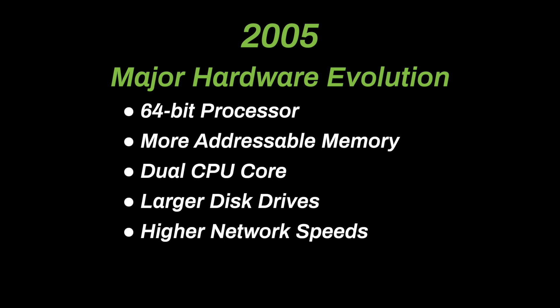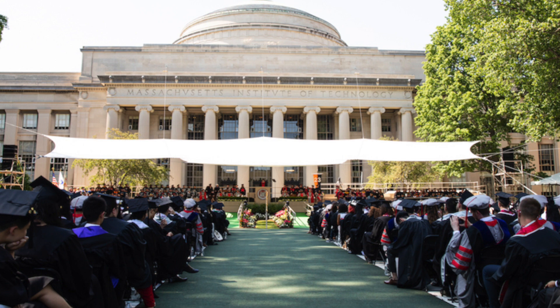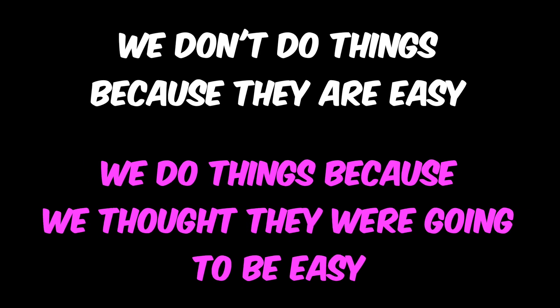A computer could service many times the number of applications and requests in the same physical space with just a little more power. Fortunately, the software would be easy to modify to take advantage of the new processors. As the graduation speech always includes: we don't do things because they are easy — we do things because we thought they were going to be easy. And so it was with containers.